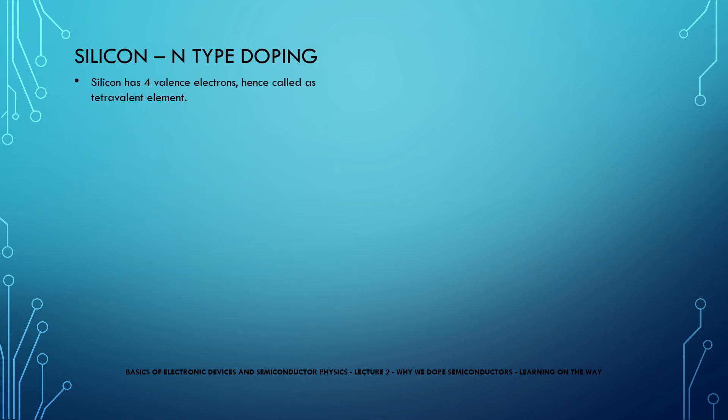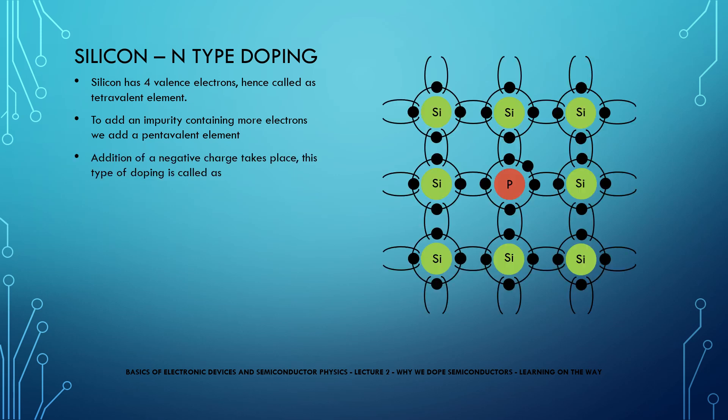Since silicon has 4 electrons in its autonomous shell, it is called a tetravalent element. Hence, to add an impurity containing more electrons, we add a pentavalent element. Since an addition of a negative charge is taking place, we call this N-type doping or electron donor doping.